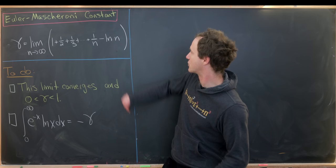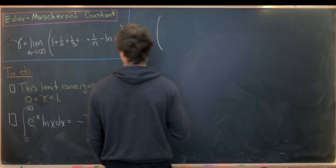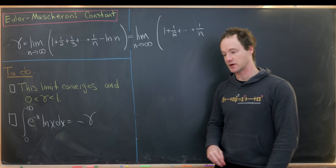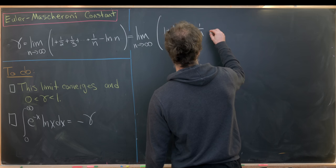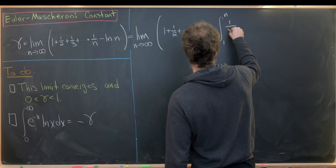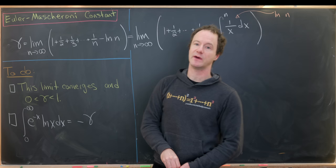We'll start by proving the convergence property by rewriting the limit a little. We rewrite it as the limit as n goes to infinity of 1 plus one-half, all the way up to 1/n. Then we recognize that the natural log of n is actually the area under the curve 1/x from 1 to n, so we write it as the integral from 1 to n of 1/x dx — since the antiderivative gives the natural log of x evaluated at n.